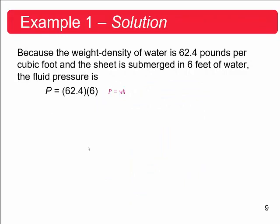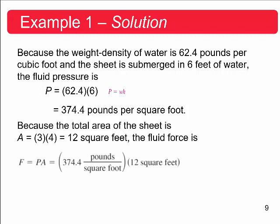All right, so because the weight density of water is 62.4 pounds per cubic foot, and the sheet is submerged in six feet of water, that fluid pressure is just P is equal to the weight density times the depth, so 62.4 times 6, which is just 374.4 pounds per square foot.